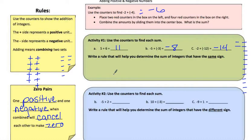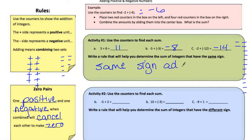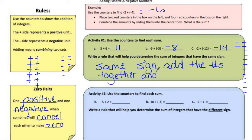It says write a rule that will help you determine the sum of integers that have the same sign. When they have the same sign, you simply add them together — that's our rhyme: same sign, add the numbers together and keep the sign. So if they're positive, they stay positive; if they're negative, they stay negative.